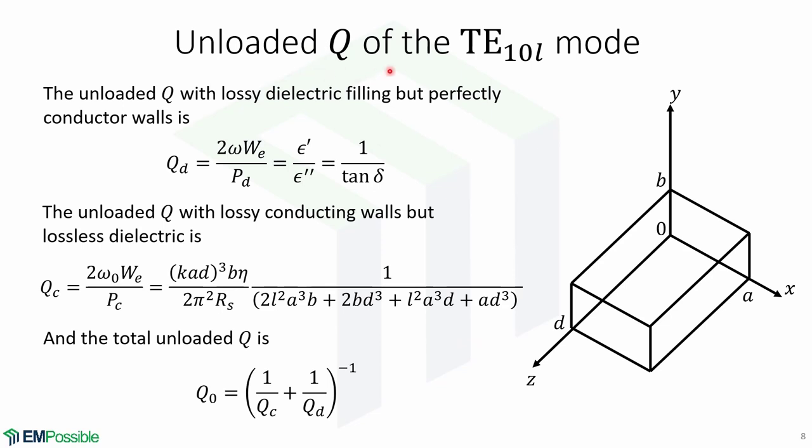Now let's look at the unloaded Q of the TE10l mode. First, we will calculate the unloaded Q with lossy dielectric filling but perfectly conducting walls, and it's given by this expression: 2ω wE over Pd equals ε'/ε'', which equals 1 over the loss tangent. The unloaded Q with lossy conducting walls but lossless dielectric is given by 2ω wE over Pc, which is given by this long expression. And thus, the total unloaded Q equals the inverse of the sum of 1 over Qc plus 1 over Qd.